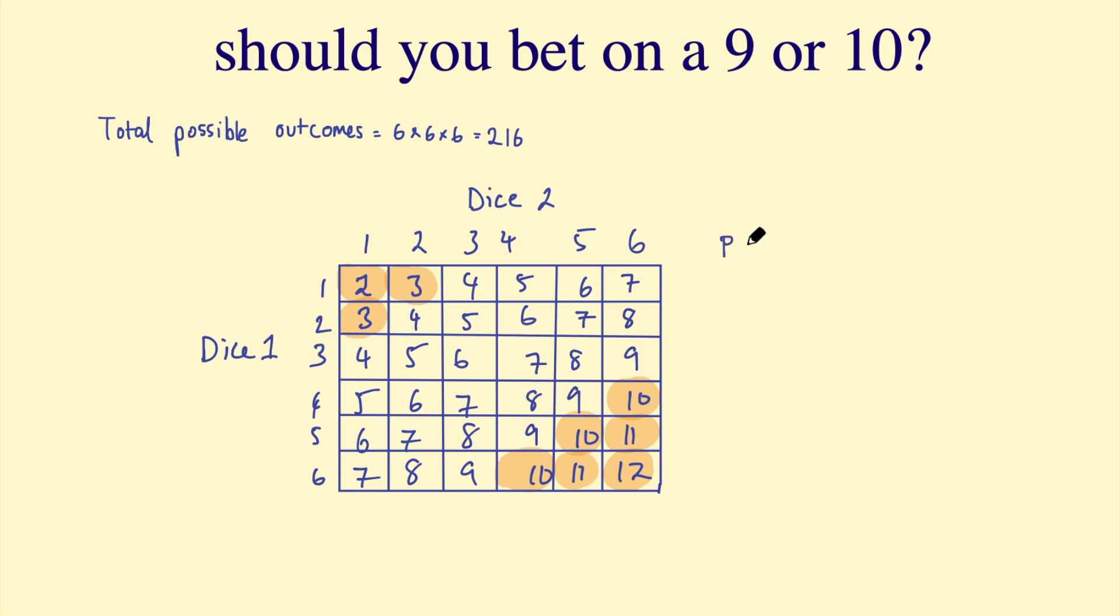We can say the probability of rolling a 10 with three dice is 27 out of the total possible outcomes, which is 216. Okay, so that's the probability of rolling a 10 with three dice. What about 9?